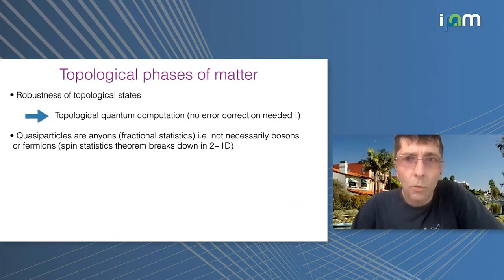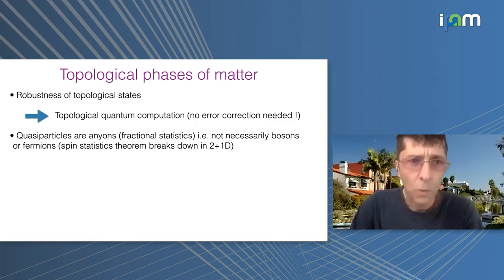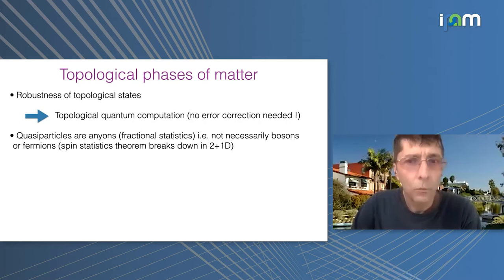To be a bit more specific: the excitations are exotic because the quasi-particles are anyons, in the sense that they can have any statistics — fractional statistics. That is, they are not necessarily bosons or fermions, because we are working in 2+1 dimensions and there is no spin-statistics theorem to forbid that.